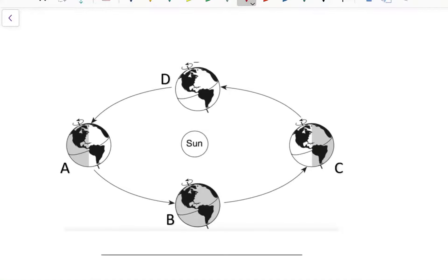Let's start here with position A. If we look at position A and we find the North Pole, we can see that the North Pole is tilted away from the Sun. We can also look at the shading in the diagram and by looking at the shading, we see that the North Pole is in total darkness.